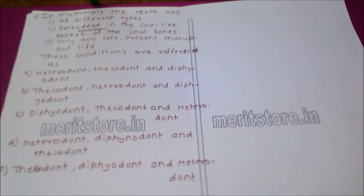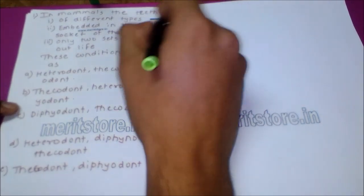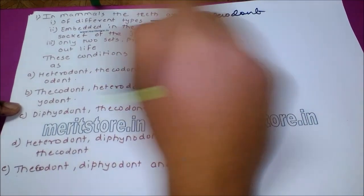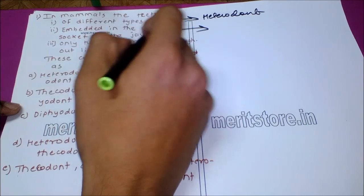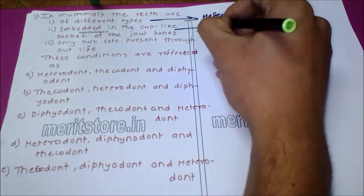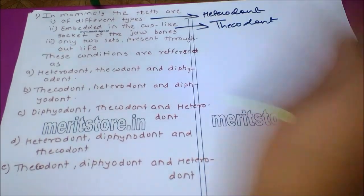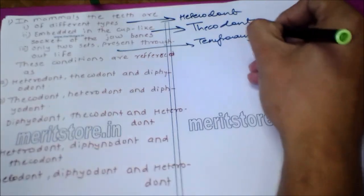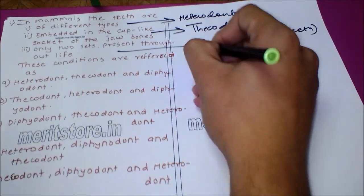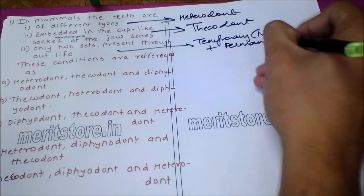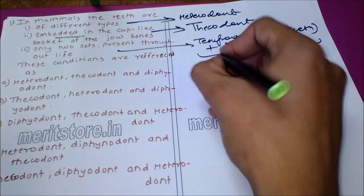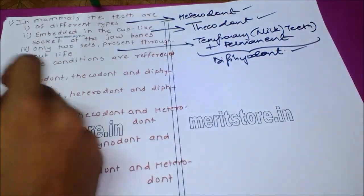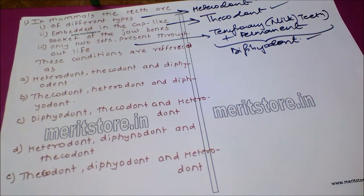The first property — presence of teeth of different types — is known as heterodont. The property of teeth being embedded in cup-like sockets of the jaw bones is known as thecodont. Two different sets, that is temporary or milk teeth and permanent teeth, are found in humans and some mammals, and this property is known as diphyodont. So the correct sequence is option A: heterodont, thecodont, and diphyodont.